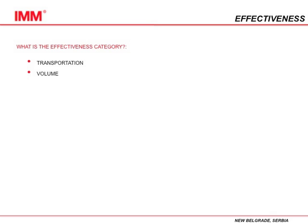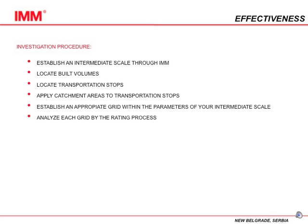In order to calculate effectiveness, we use the ratio of the total number of public trips divided by the total number of trips.